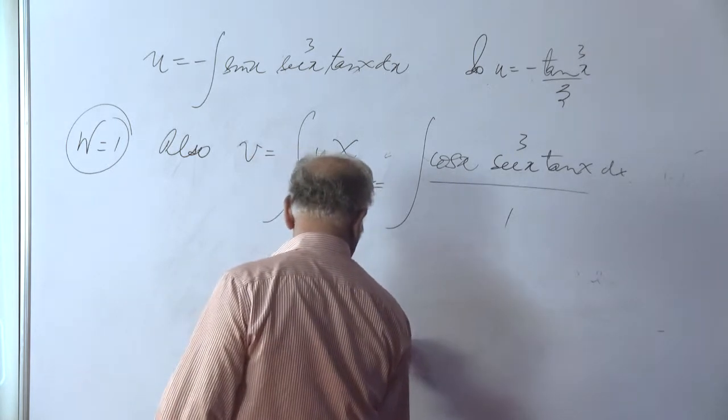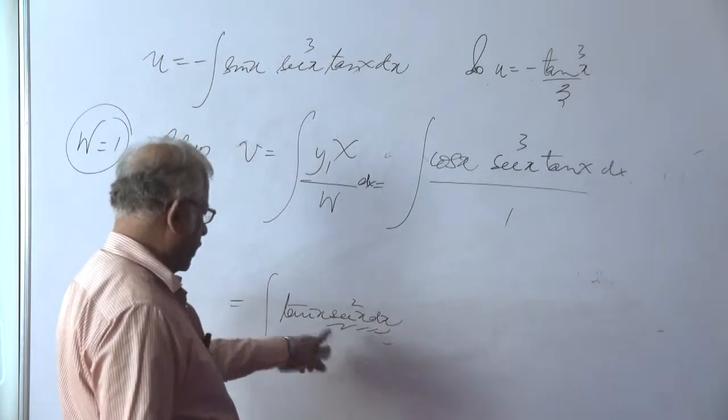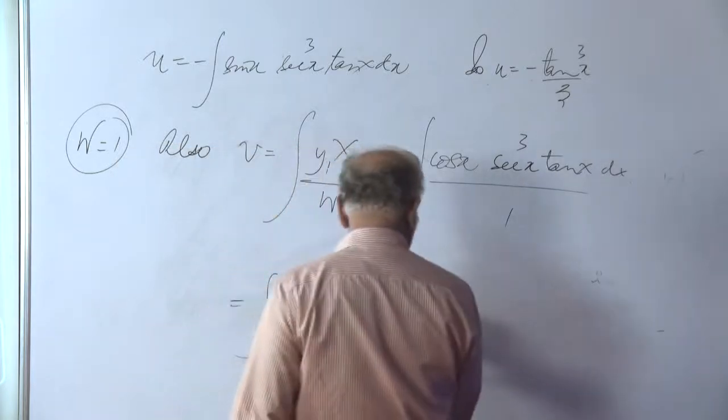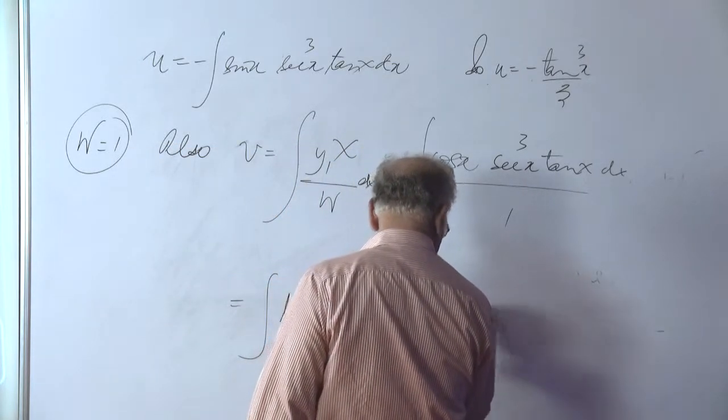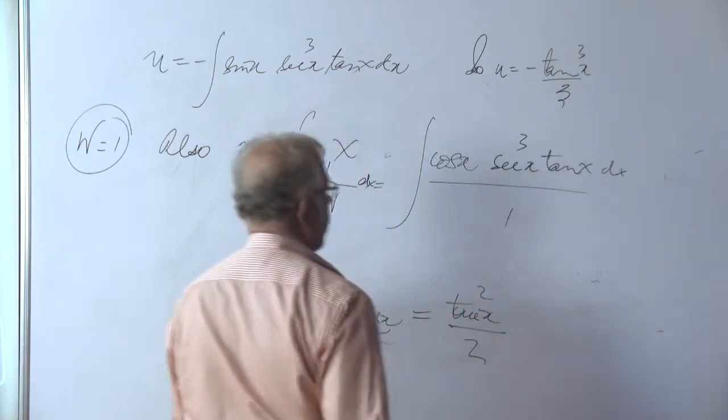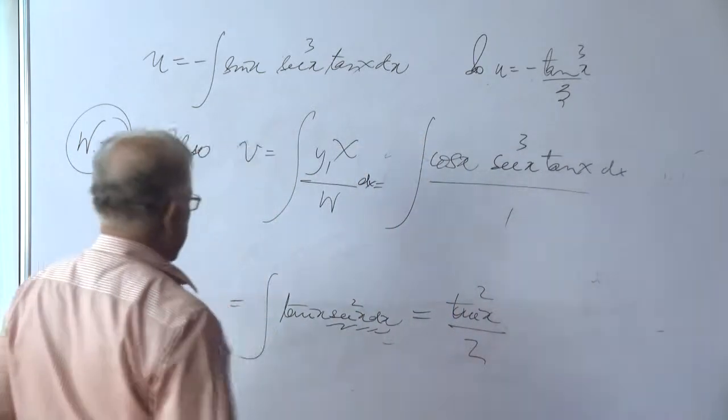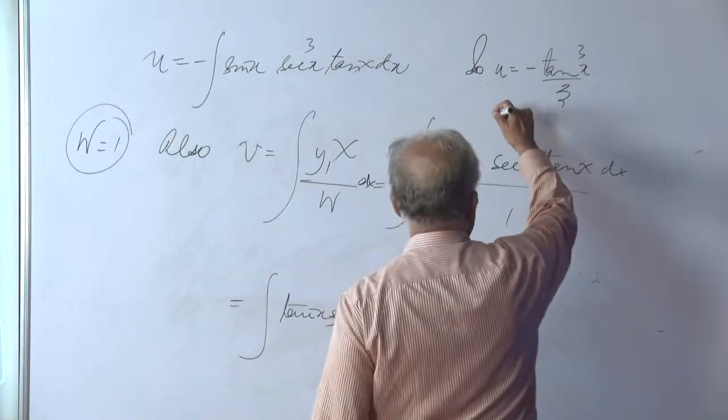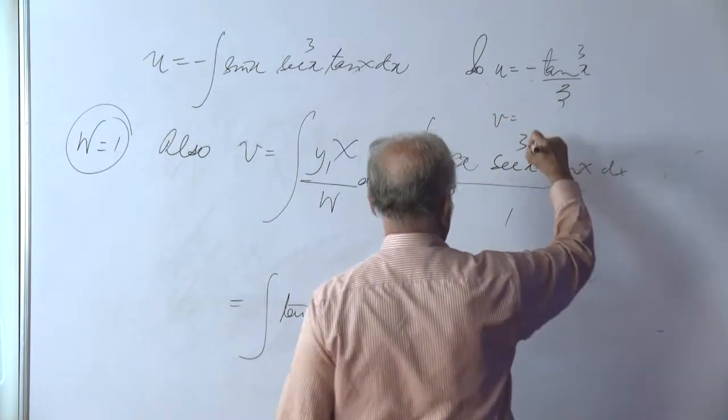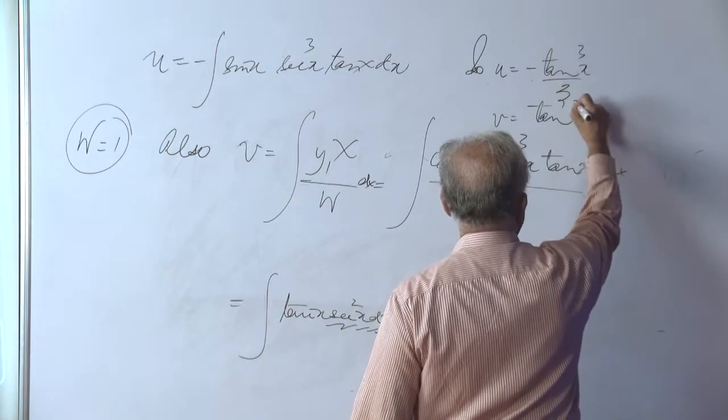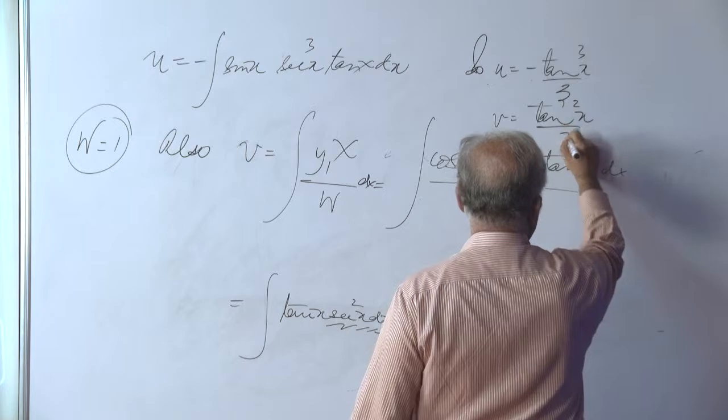Again, observing that this is nothing but the differential of tan x. So, it is z dz, nothing but z squared by 2. So, tan squared x by 2. That is our v. So, we can write v as tan squared x by 2.